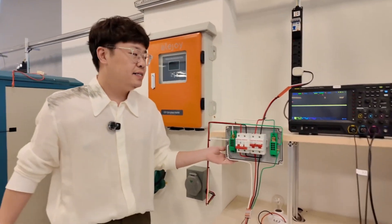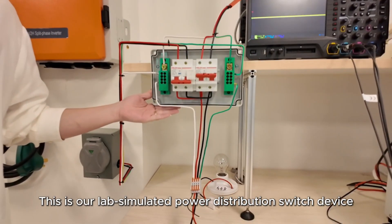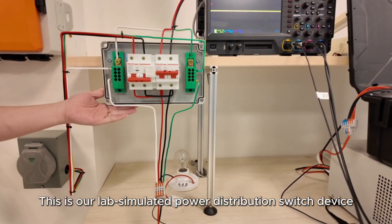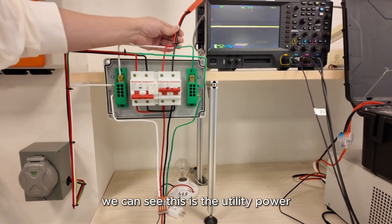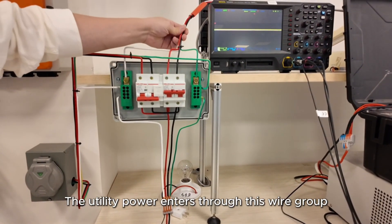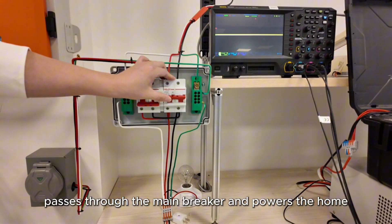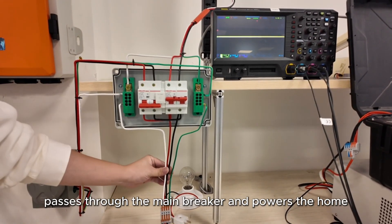Now let's look here. This is our lab simulated power distribution switch device. First, we can see this is the utility power. The utility power enters through this wire group, passes through the main breaker and powers the home.